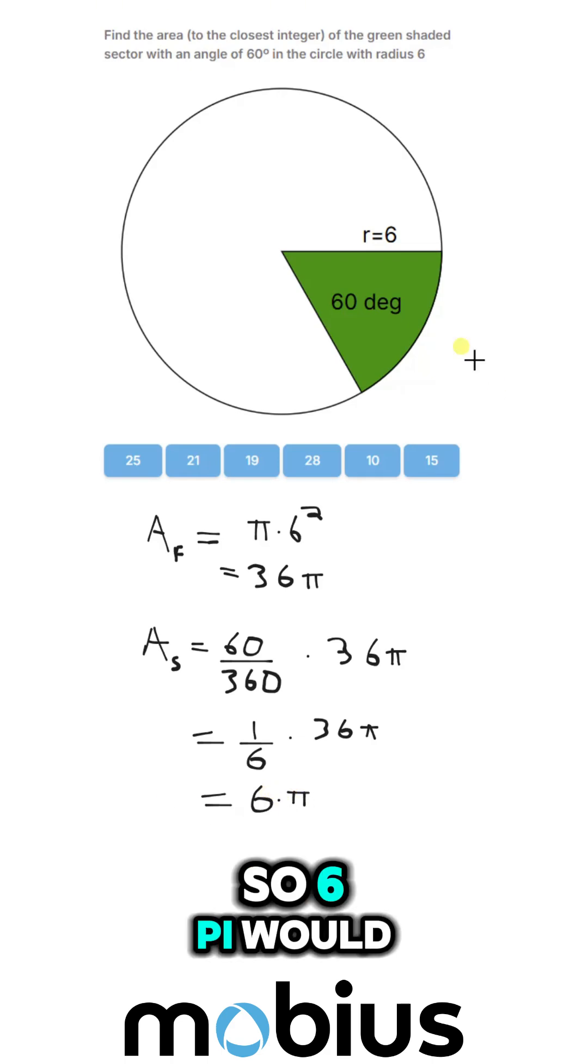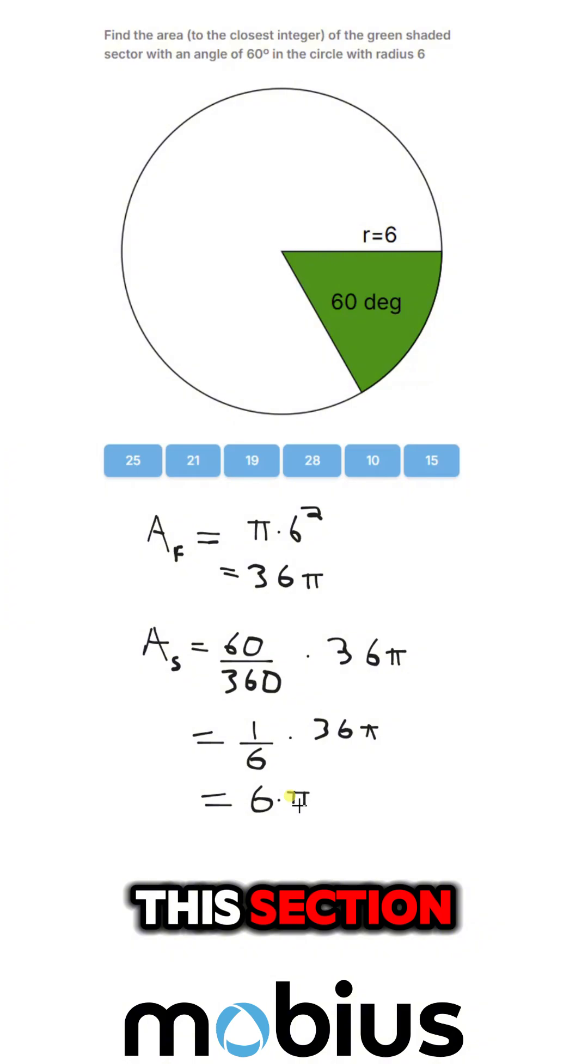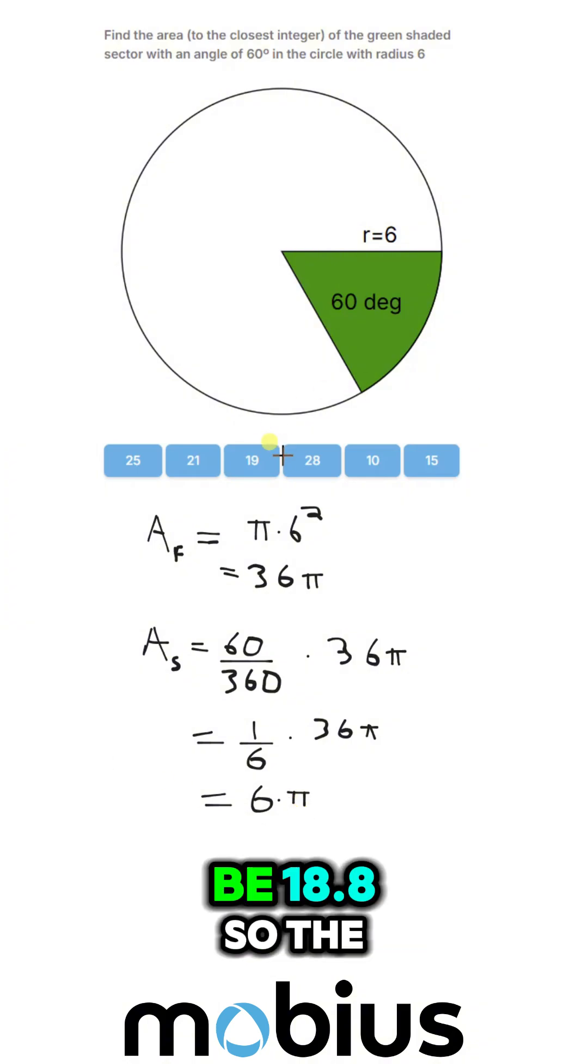So 6π would be the area of this section. And 6π would be 18.8, the closest integer.